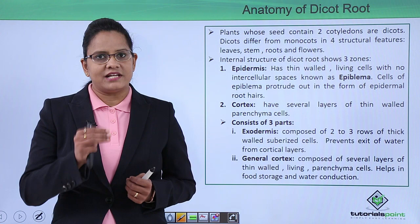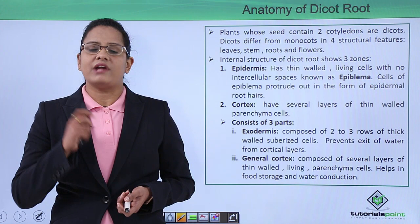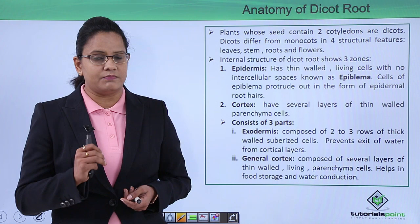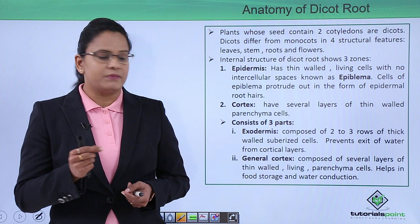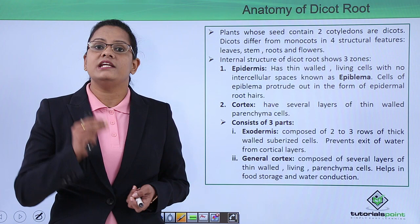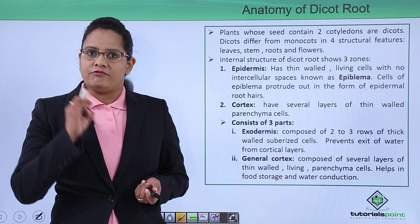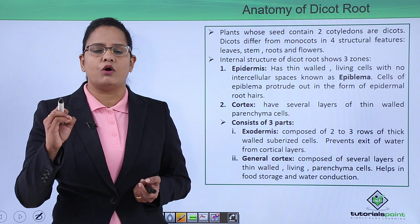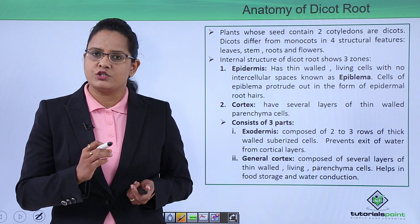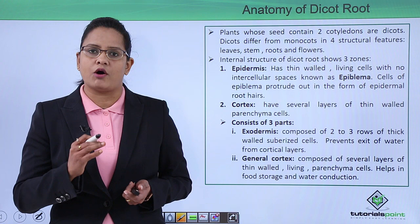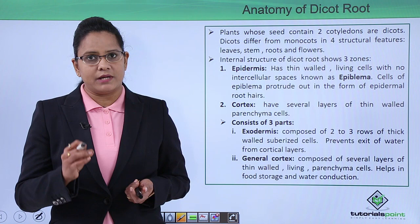The internal structure of the dicot root is divided into three zones. The first is the epidermis, made up of thin-walled living cells with no intercellular space. In the case of roots, epidermis is known as epiblema. The cells of the epidermis protrude out to form unicellular root hairs, whose function is maximum absorption of water and nutrients for the plant.